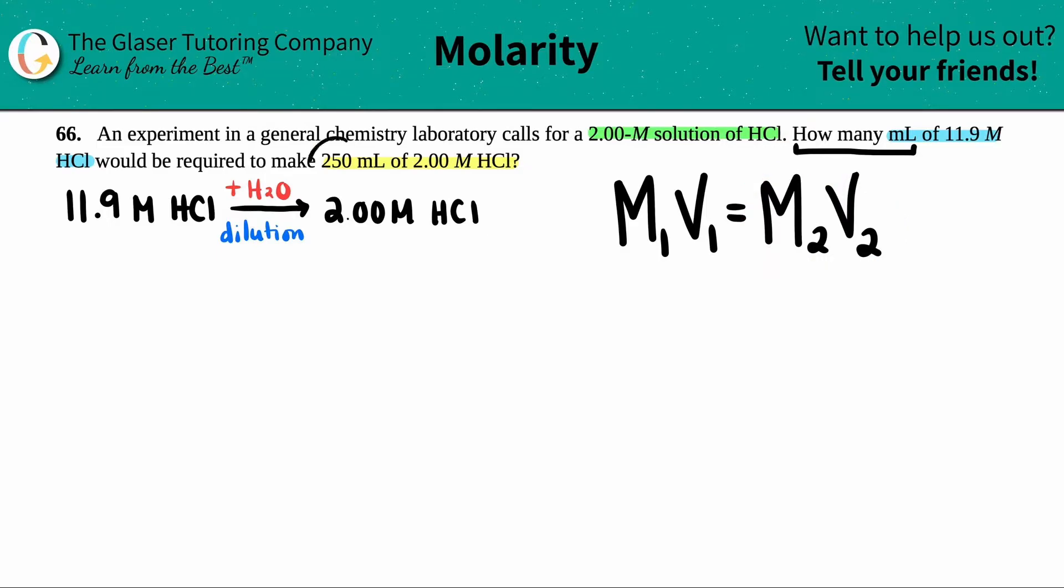So if they're saying that we have a volume of a certain molarity, these two numbers correlate with each other. They're together. They're a pair. So I know that if I want to make a 2 molar solution, I need to have 250 mils. Now that's going to go on one side of the equal sign. Does it really matter what side? No, the math is still going to be the same and you're going to get the same answer.